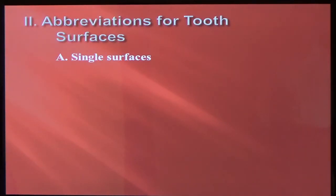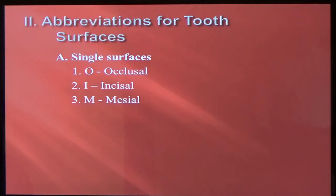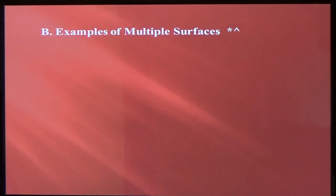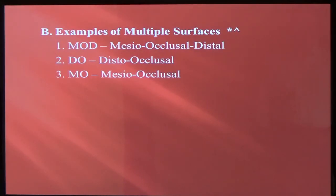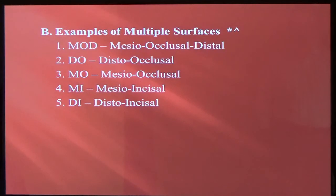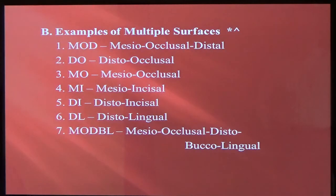Abbreviations for tooth surfaces. Single tooth surfaces: O for occlusal, I for incisal, M for mesial, D for distal, B for buccal, L for lingual. When you combine these surfaces — and this is something you need to remember, it's a fill-in-the-blank question — you've got MOD (mesial occlusal distal), DO (distal occlusal), MO (mesial occlusal), MI (mesial incisal), DI (distal incisal), DL (distal lingual), and MODL (mesial occlusal distal lingual). Make sure you know how to combine these surfaces and be able to tell what they are.